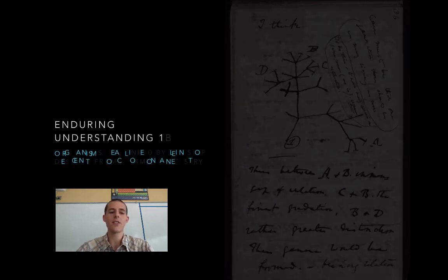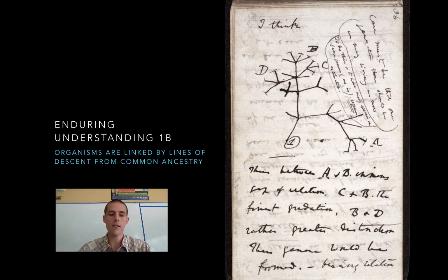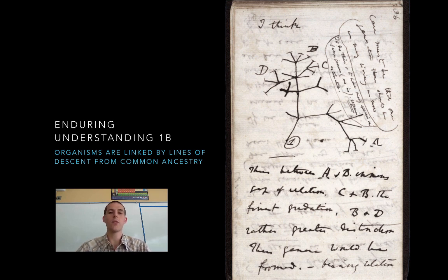The second enduring understanding is that organisms are linked by lines of descent from common ancestry. This is the idea that all of the living world can be traced back to common ancestors, with evidence including DNA, the fossil record, molecular genetics, and organelles. A major concept here is conserved processes and structures — processes or structures found all the way back through the living record. For example, all living organisms have DNA and RNA, and that DNA and RNA is composed of the same five bases: A, T, C, G, and U.